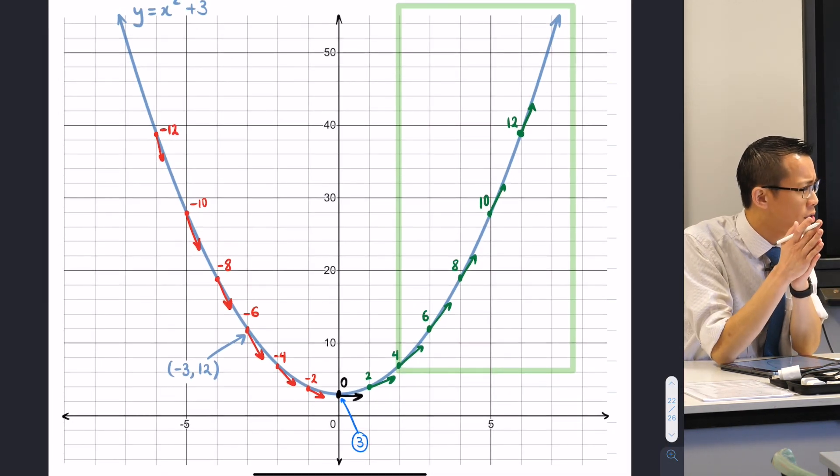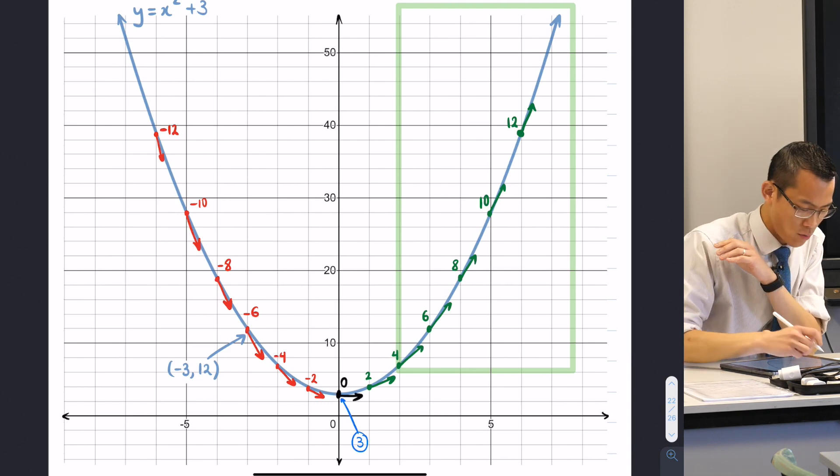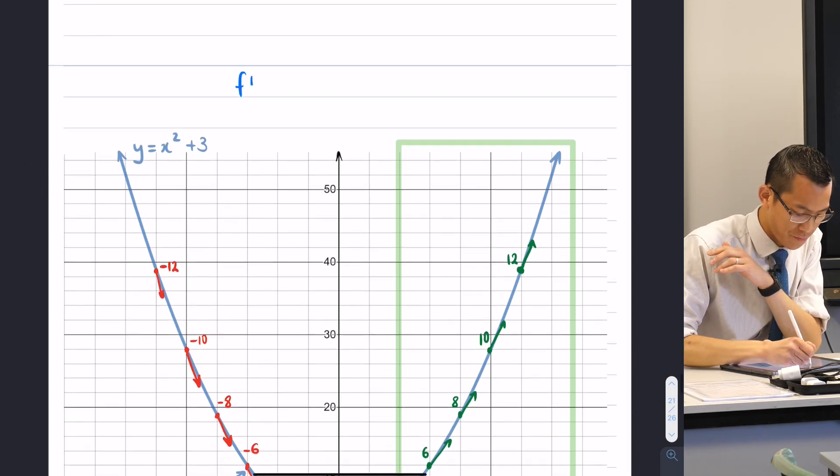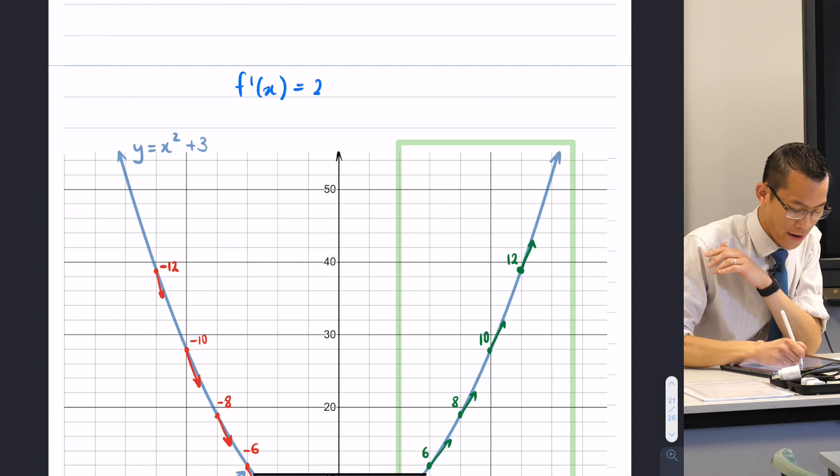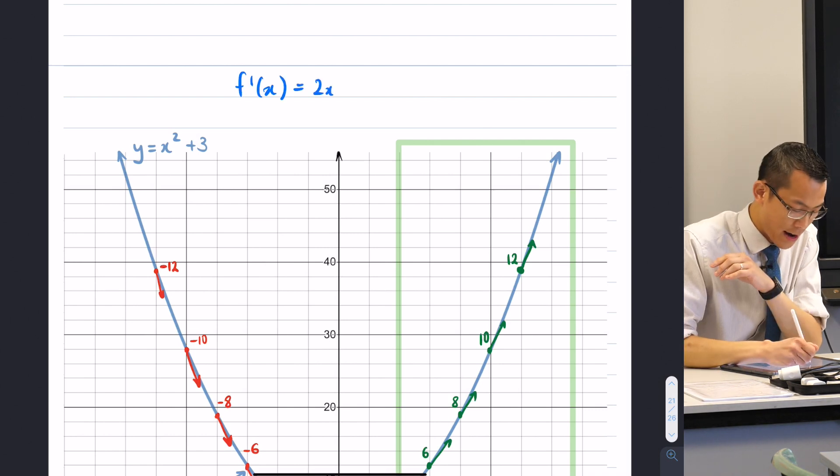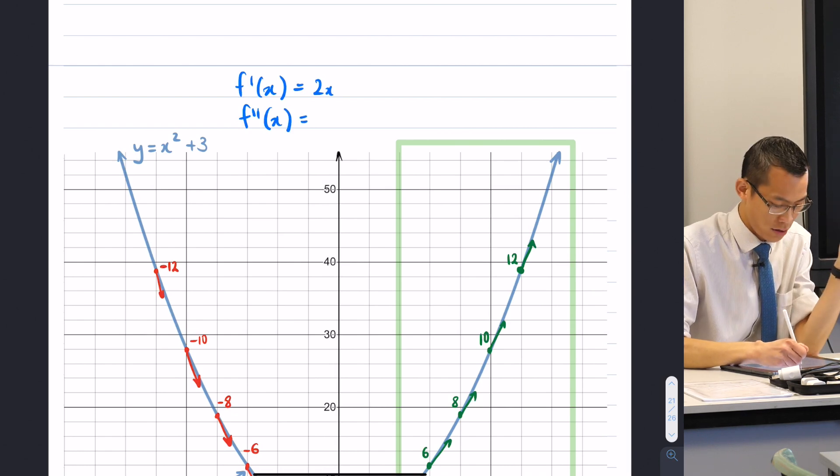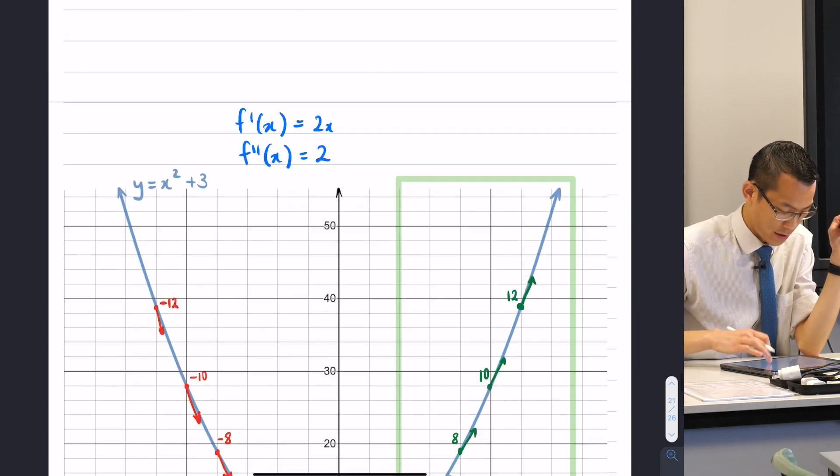I think the next thing I asked you was to differentiate. So what was your derivative? It was just 2x, it's a fairly simple derivative, and then I asked you to differentiate again, which gave you just 2. Okay, so it's just a constant, interesting.